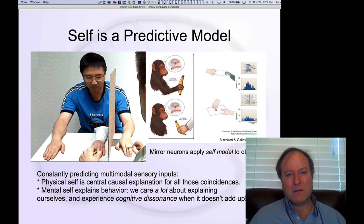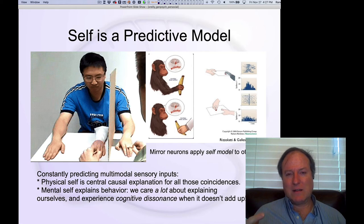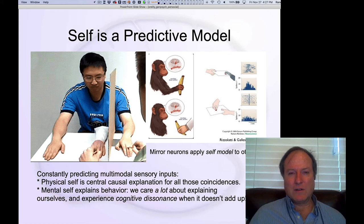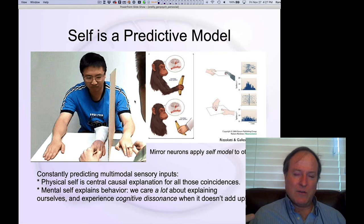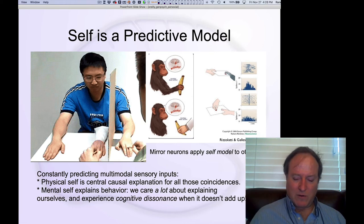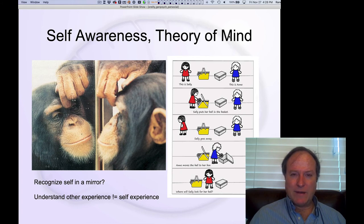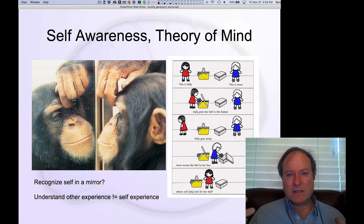We're always trying to understand other people's motivations by mapping them onto how that would make us operate. At some level we're very empathetic in that sense, but we're also always coloring things through our own interpretation and lenses — not necessarily able to truly see things through other people's eyes. This ability to map between our internal subjective sense of understanding and how other people are operating is a very important construct called theory of mind.